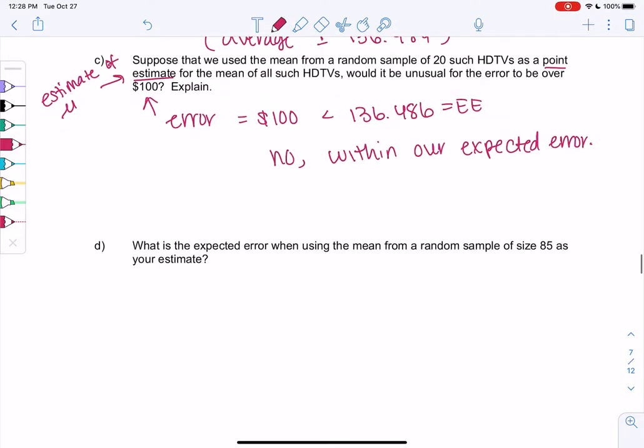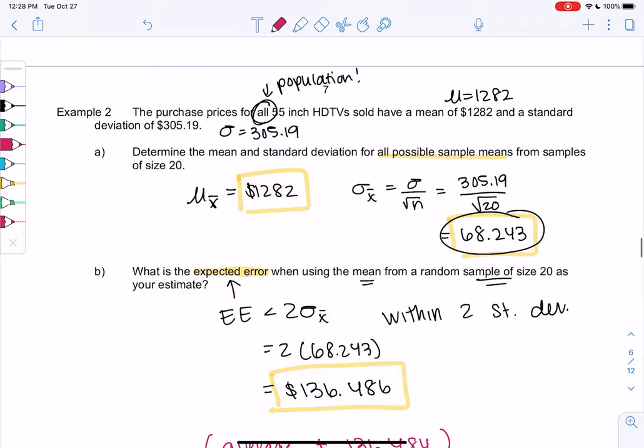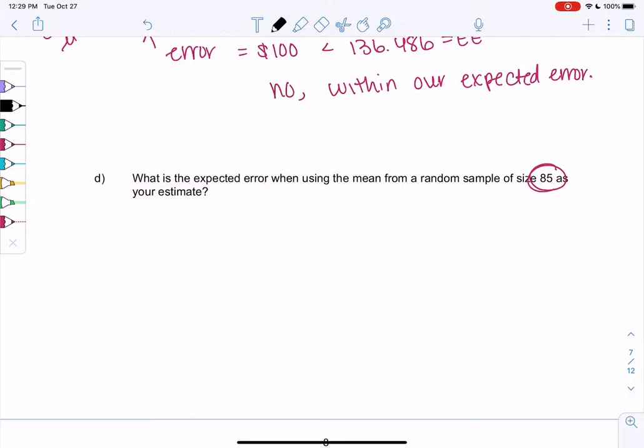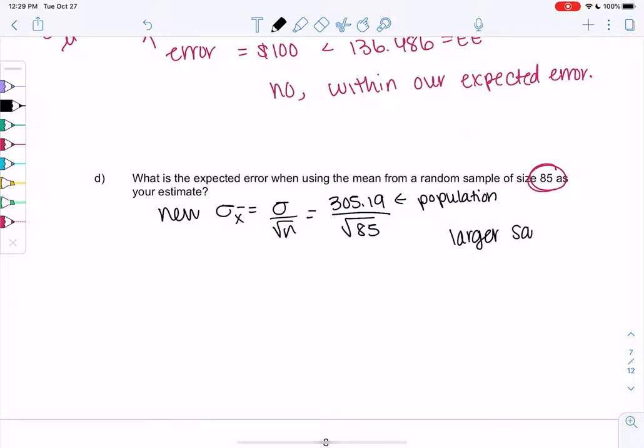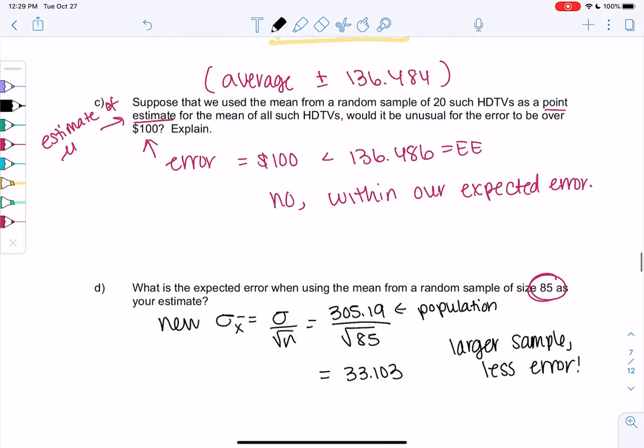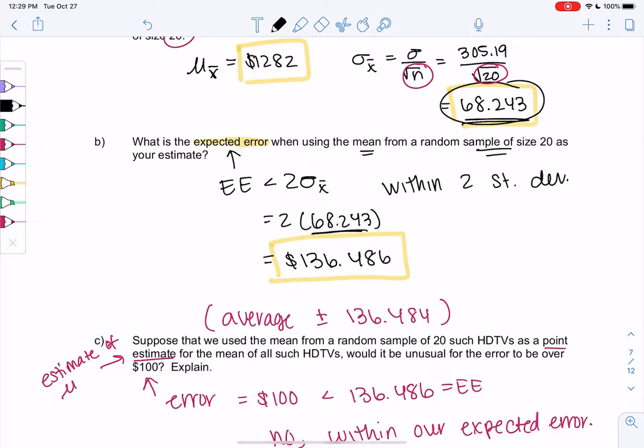So let's see what happens when we change sample size. What's the expected error when we're using the mean from a random sample, but this time we're going to do size 85. So above we did size 20. So we're going to have to find a new standard deviation because 20 has now changed. So it'll be sigma over square root n. So we take the original sigma, the population, the 305.19, and we divide by the sample size. And it's going to be even smaller because as we get bigger samples, we're going to have less error. Meaning we're going to get better estimates of the average. So if we plug this into the calculator, I got 33.103, which is smaller than 68 last time. Last time we got 68. So less error.